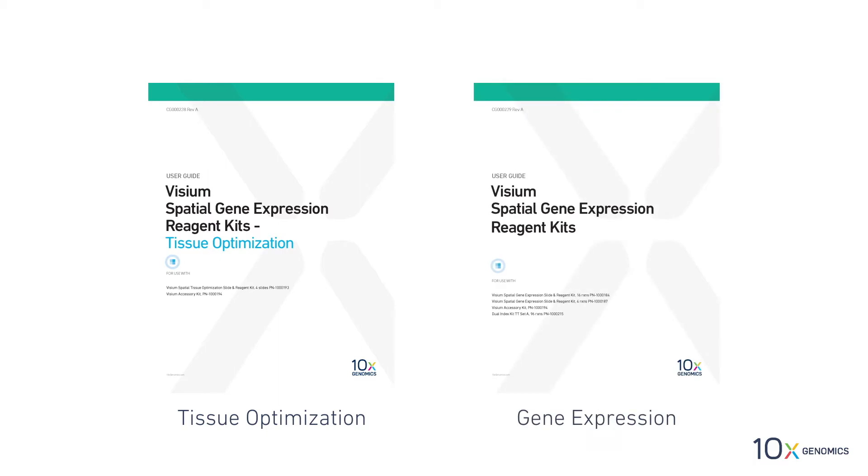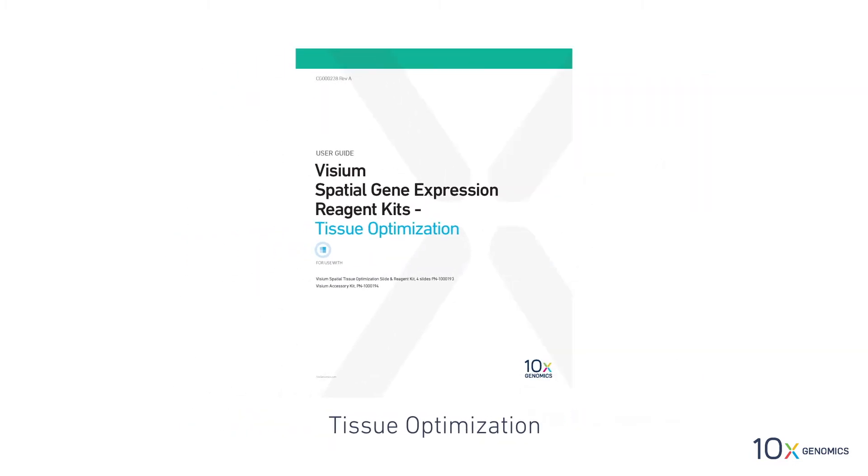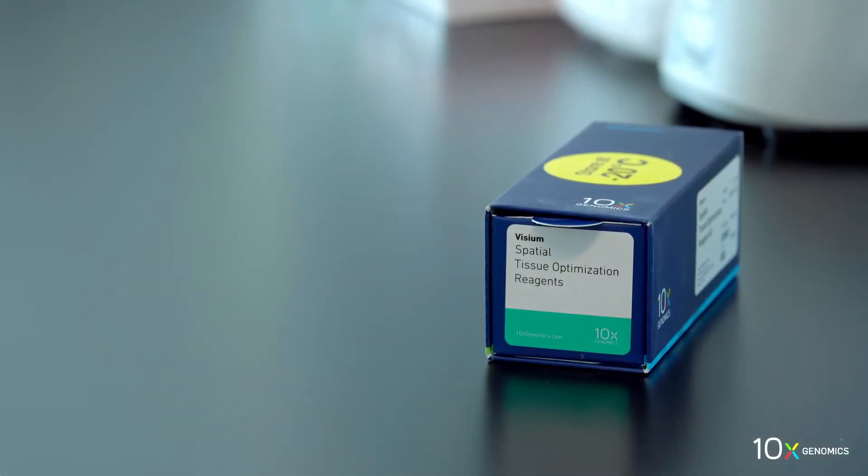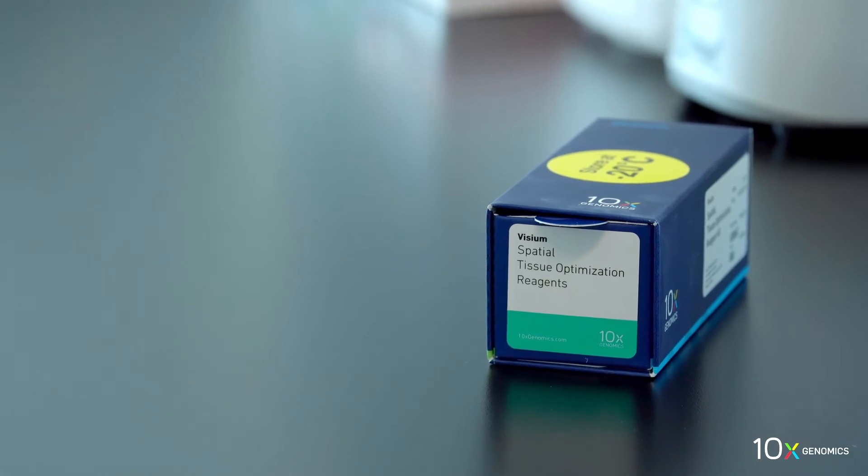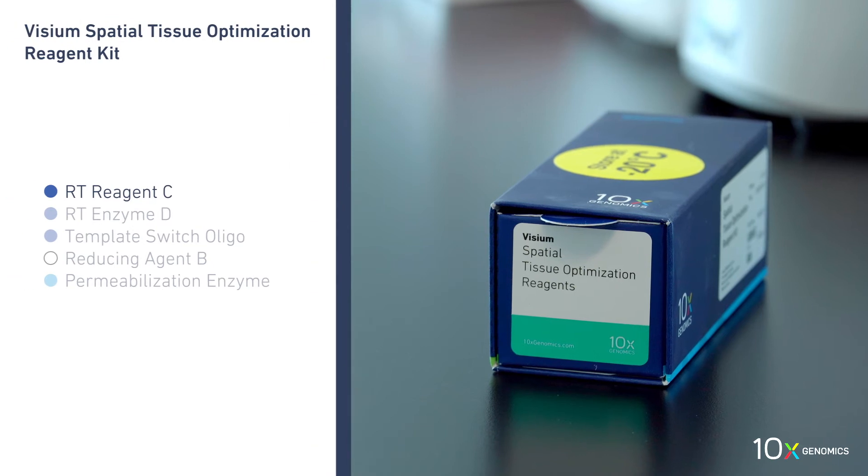In this video series, we will demonstrate the Visium Spatial Tissue Optimization Protocol. The Visium Spatial Tissue Optimization Reagent Kit is stored at minus 20 degrees Celsius and contains RT Reagent C,